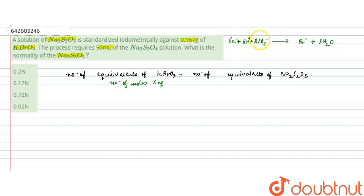So this process when BrO3 negative converts to Br negative requires 6 electrons, so the n-factor for the KBrO3 is 6. So we can write 6 here.